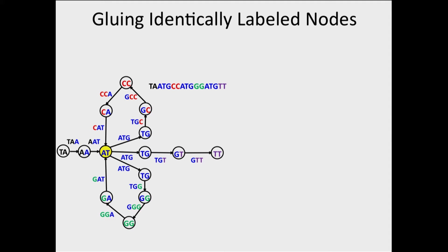Now, we haven't done yet, because there are more identically labeled nodes in this graph. Here it is, three nodes labeled TG. Let's bring them closer together, and finally, they will be glued into the same node.